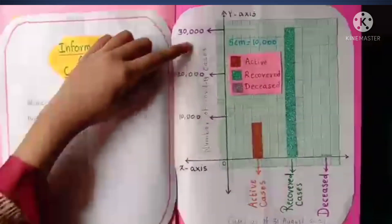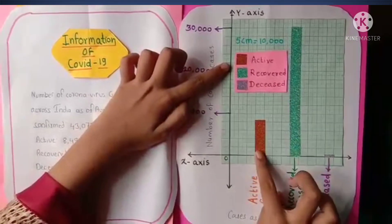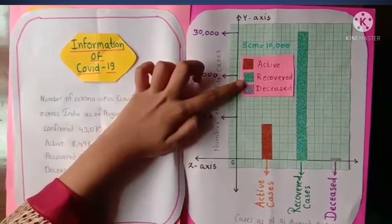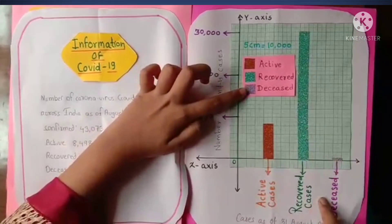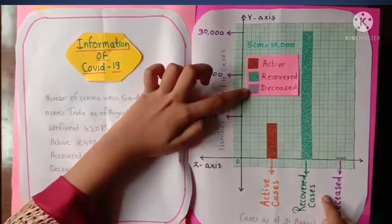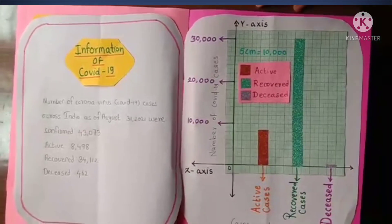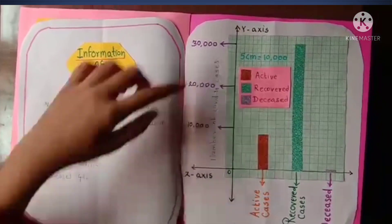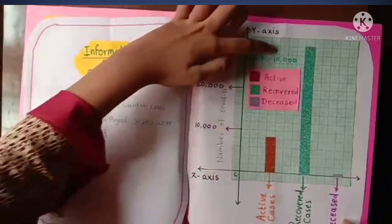With the orange color I have represented the active cases — here is the bar of active cases. Here is the bar of recovered cases, and here are the deceased cases represented with purple color. Each 5 cm equals 10,000 cases.